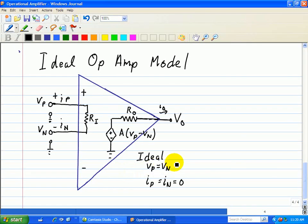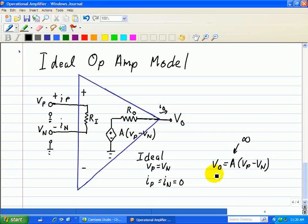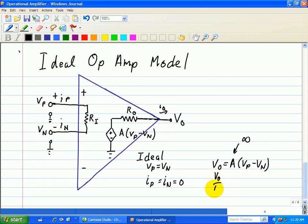First, let's look at VP equals VN. Since our output is VO, and is a result of the application between VP minus VN, we have this relationship, but A, we can assume, is very large or infinite. When that's the case, VO divided by A is closely equal to zero. That's approximated, and that results that means that VP equals to VN.